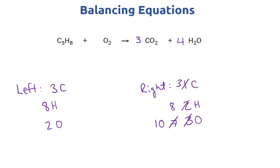Now that carbon and hydrogen are both balanced, we can tackle the oxygen. The right side has ten oxygens and the left side has two. Since the left side only has oxygen in one molecule, we just need to change the O2 coefficient so that we have ten oxygens on the left. So we put a five before O2 — five times two is ten — giving us ten oxygens on the left and ten on the right. We're finished balancing.